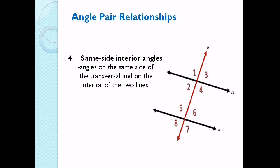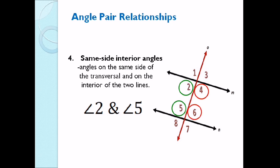Number 4: We have the same side interior angles — angles on the same side of the transversal and on the interior of the two lines. The same side interior angles are: angle 2 and angle 5, and angle 4 and angle 6.